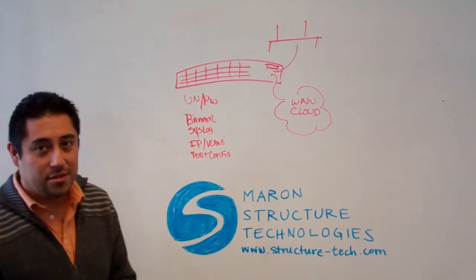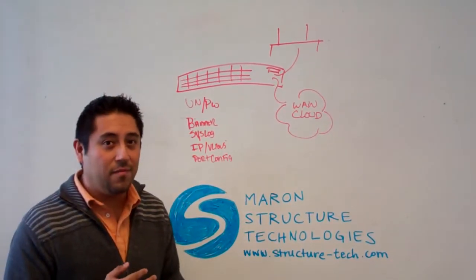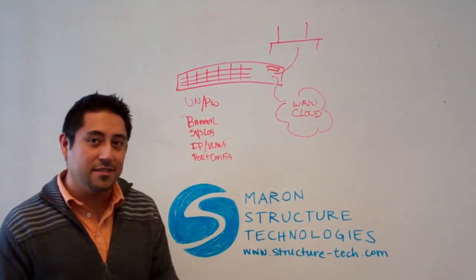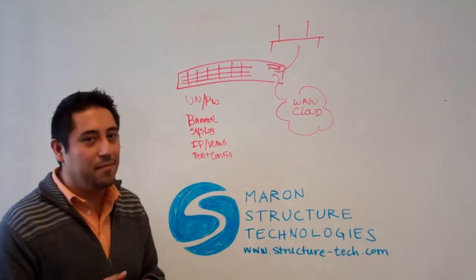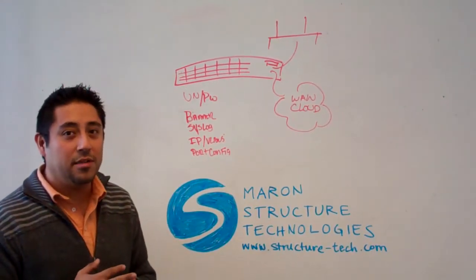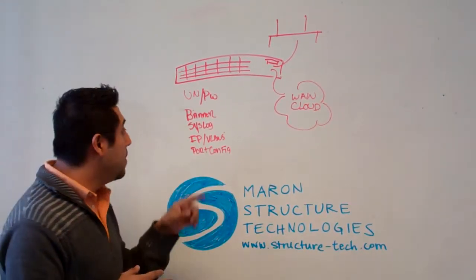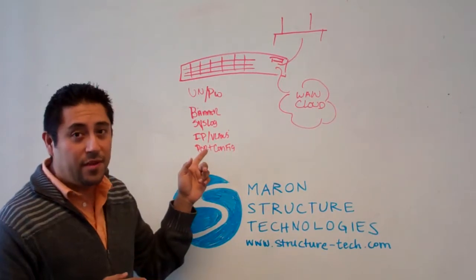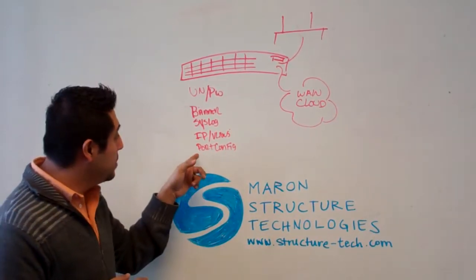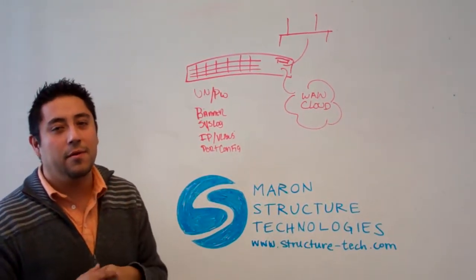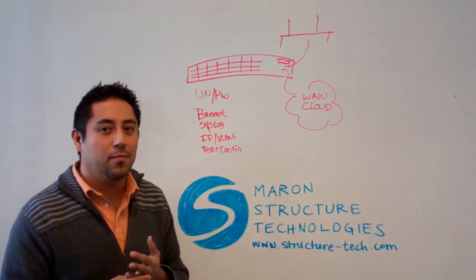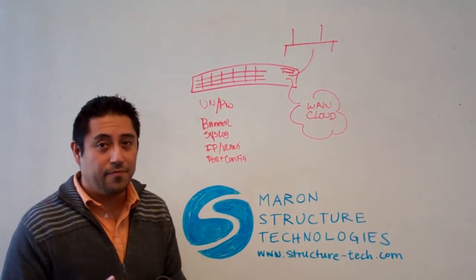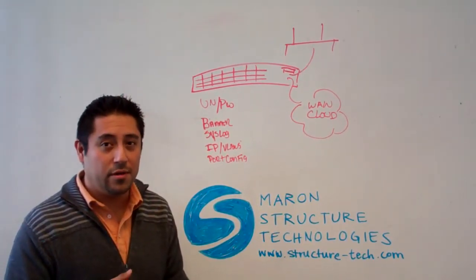IP and VLAN structure — definitely one of the key components. If you want your switch to talk to something, this is what you're going to have to set up: an IP address, whether it be directly on the port, or set up in a VLAN, which brings us to port configuration. How are you configuring your ports? Either a trunk or an access port.